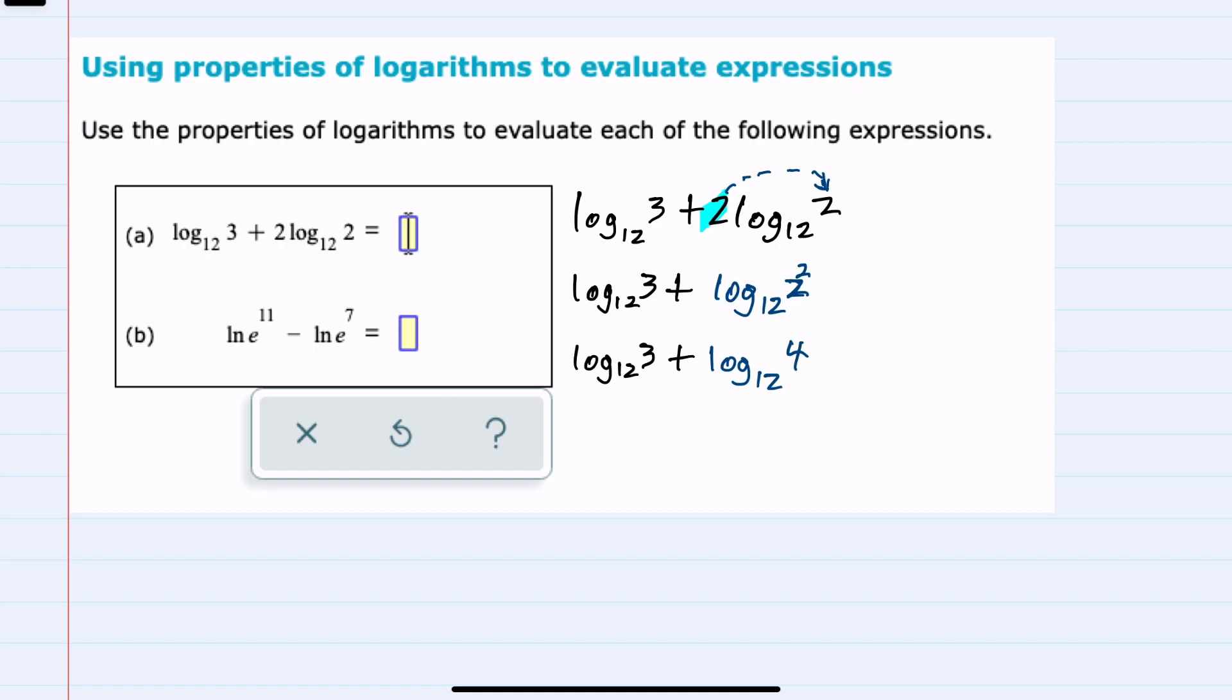And then, since we have these logs being added where the logs have the same base, for addition, I can combine these into a single log base 12. And the addition means that I can simplify here into 3 times the 4, which gives us the log base 12 of 12.